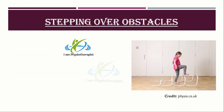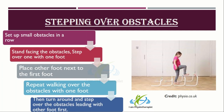Obstacle gait training: set up 5 or 6 small obstacles in a row, about 15 inches apart. Obstacles can be rolled-up towels, athletic hurdles, or small stacks of books. Stand facing the obstacles and step over one with one foot, then place the other foot next to the first foot. Repeat walking over the obstacles with one foot, then turn around and step over the obstacles leading with the other foot first. When this becomes easy, step over the first obstacle, then step all the way over the next obstacle in the row. Be sure to lift your knee up high and lift your foot and ankle up towards your buttocks when taking steps.